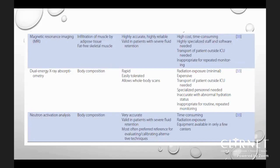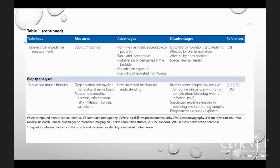MRI, dual-energy X-ray absorptiometry, and neutron activation analysis are additional imaging options. Nerve and muscle biopsies can assess degeneration, myelination status of nerve fibers, muscle fiber atrophy, necrosis, and inflammation, increasing mechanistic understanding. However, biopsy is invasive, with risks of bleeding, wound infection, and pain; specialized expertise is needed and prognostic value is poorly explored.